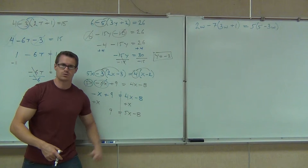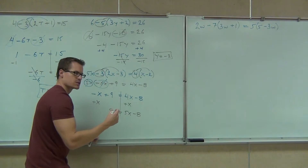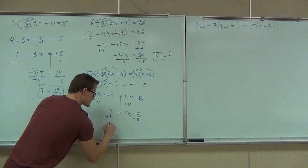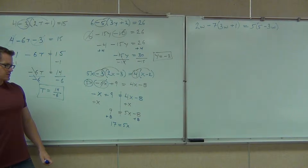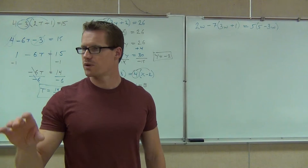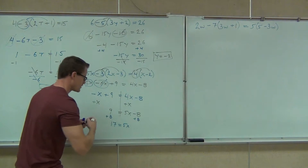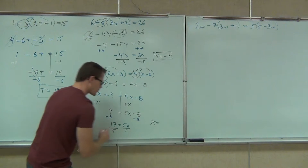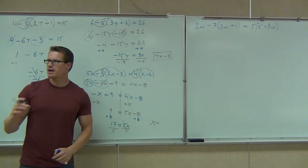How do we isolate? That's our constant term — yes, I'm going to get rid of that first. We're going to get 17 equals 5x. Our last step is always to divide: if we have a coefficient out front, we get rid of it by division. We divide both sides by 5. The fives cancel out, and we get 17 over 5 — we leave it as a fraction.